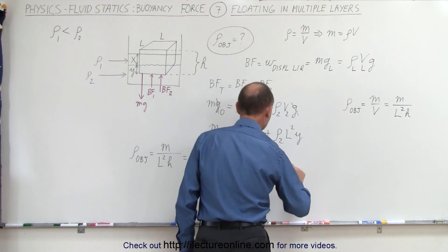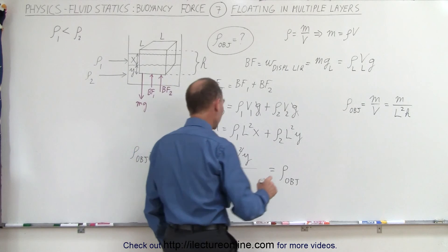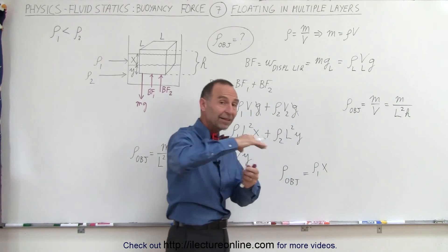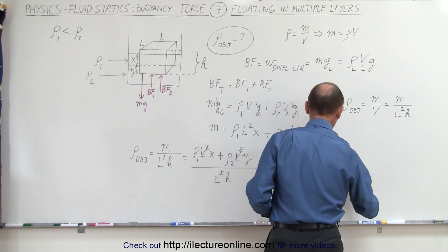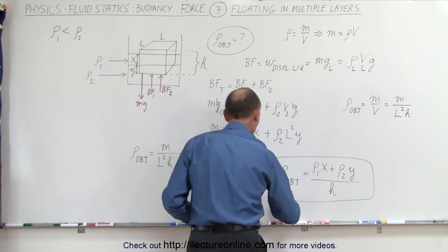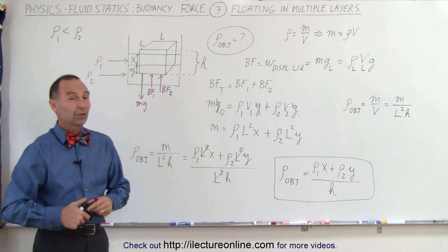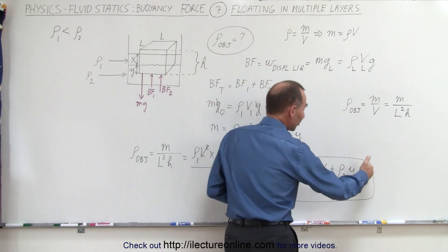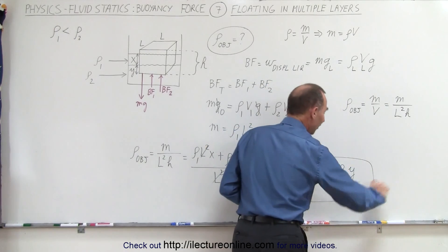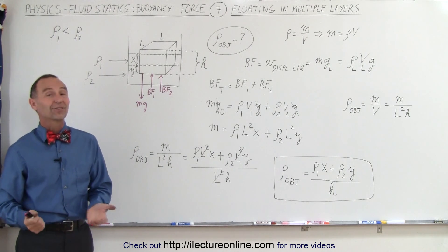Finally, the density of the object floating in a multi-layer substance equals: density of the first layer times how deep it is in the first layer, plus density of the second layer times how deep it is in the second layer, all divided by the total height of the object. For three, four, or five layers, you simply keep adding density times depth terms to the numerator, all divided by the total height. That's how it's done.